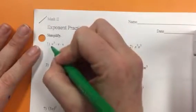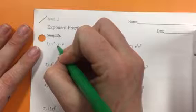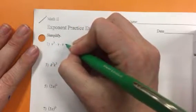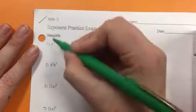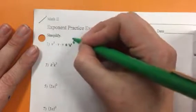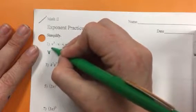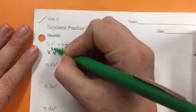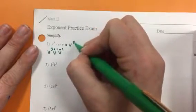On problem one we have v to the third, v to the first power, v to the first power. So if we simplify it, we have a total of three, four, five v's. What we did is we took all of the powers and we added them up to get five.